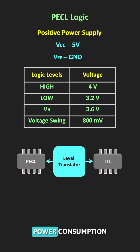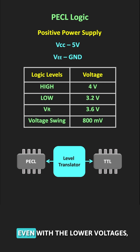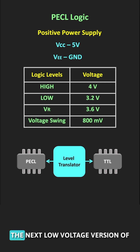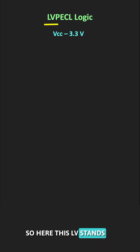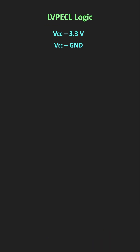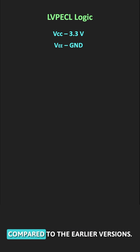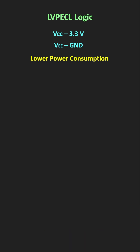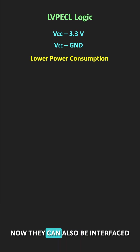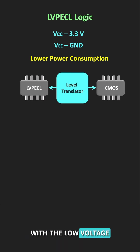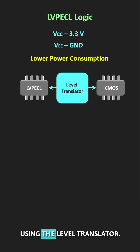To reduce power consumption and to allow operation at lower voltages, a low voltage version of PECL — called LVPECL — came into existence, where LV stands for Low Voltage. This logic can work with just 3.3V, so ICs using this logic consume lower power compared to earlier versions. Moreover, they can be interfaced with other low-voltage ICs or logic gates using a level translator.